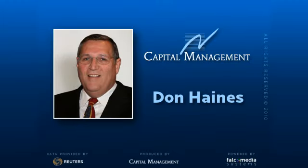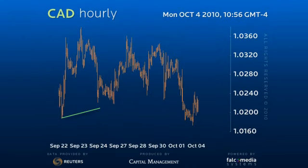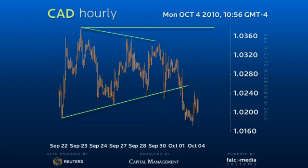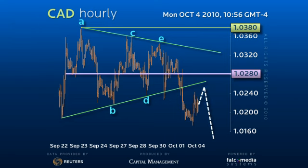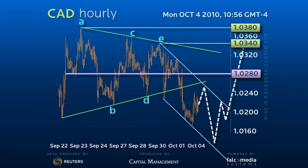Good day and welcome to the Shorter Term Outlook for the Canadian dollar. The contracting 101.90 to 103.80 consolidation triangle has broken lower and is in the process of completing the final leg of a larger expanding wedge pattern that began on September 14th. As the triangle midpoint of 102.80 contains the scope to extend the decline within tight down channel parameters from the 103.40 high, this may well see a test of the 101.30 base.